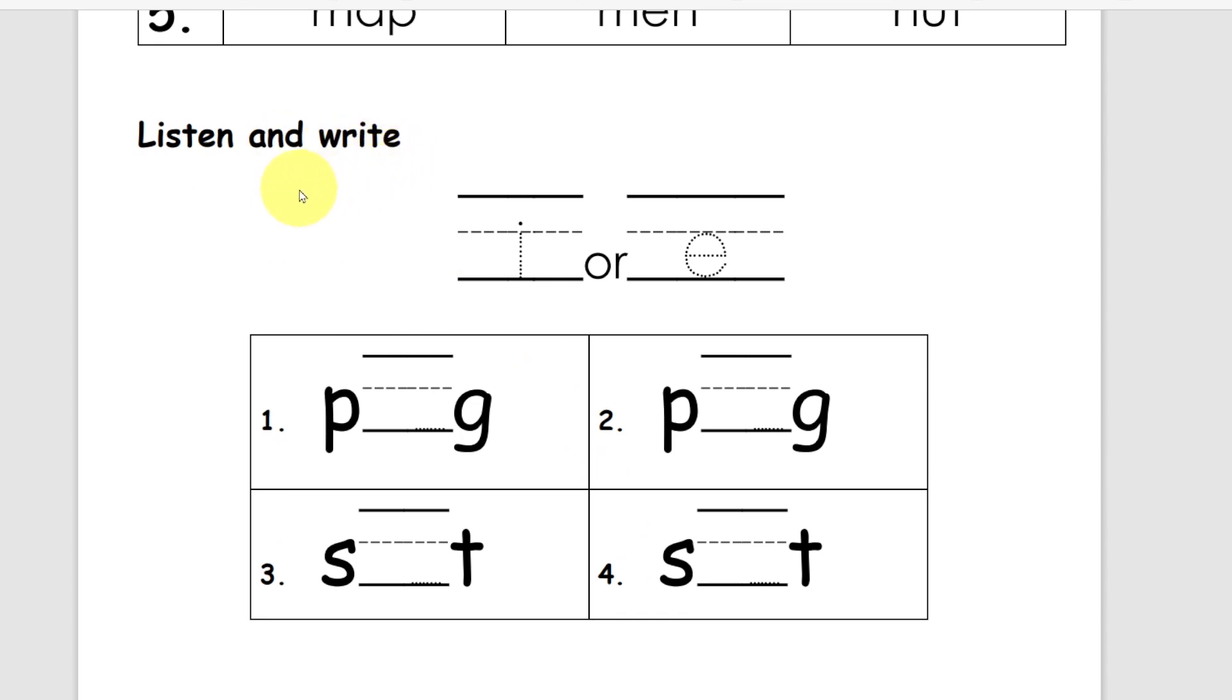Listen and write. So we have the I sound and the E sound. I'm gonna say this word and you put in the correct vowel. Short I or E. So number one, peg. Number two, pig. Number three, sit. And number four, set. Okay, let's move on.